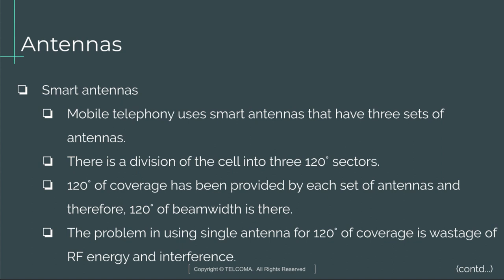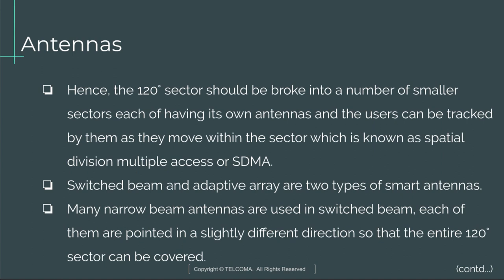Next are smart antennas. Mobile telephony uses smart antennas that have three sets of antennas, dividing the cell into three 120-degree sectors. Each set of antennas provides 120 degrees of coverage. Using a single antenna for 120-degree coverage causes wastage of RF energy and interference. Therefore, each 120-degree sector is broken into a number of smaller sectors, each with its own antennas. Users can be tracked as they move within the sector, which is known as Spatial Division Multiple Access, or SDMA.